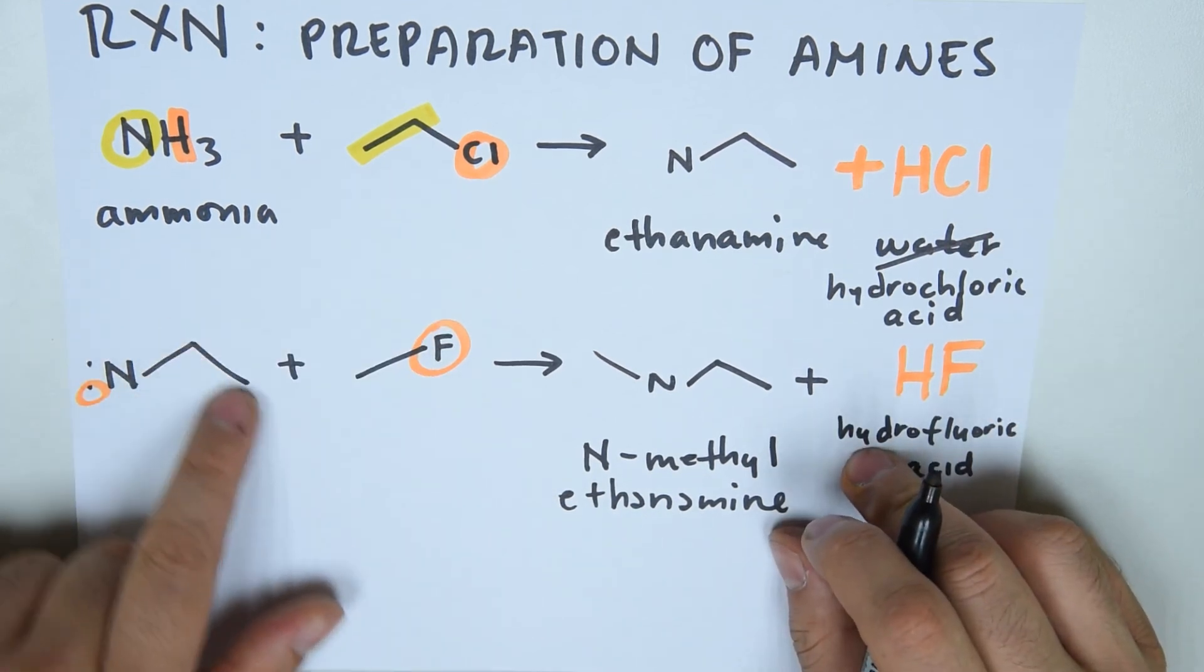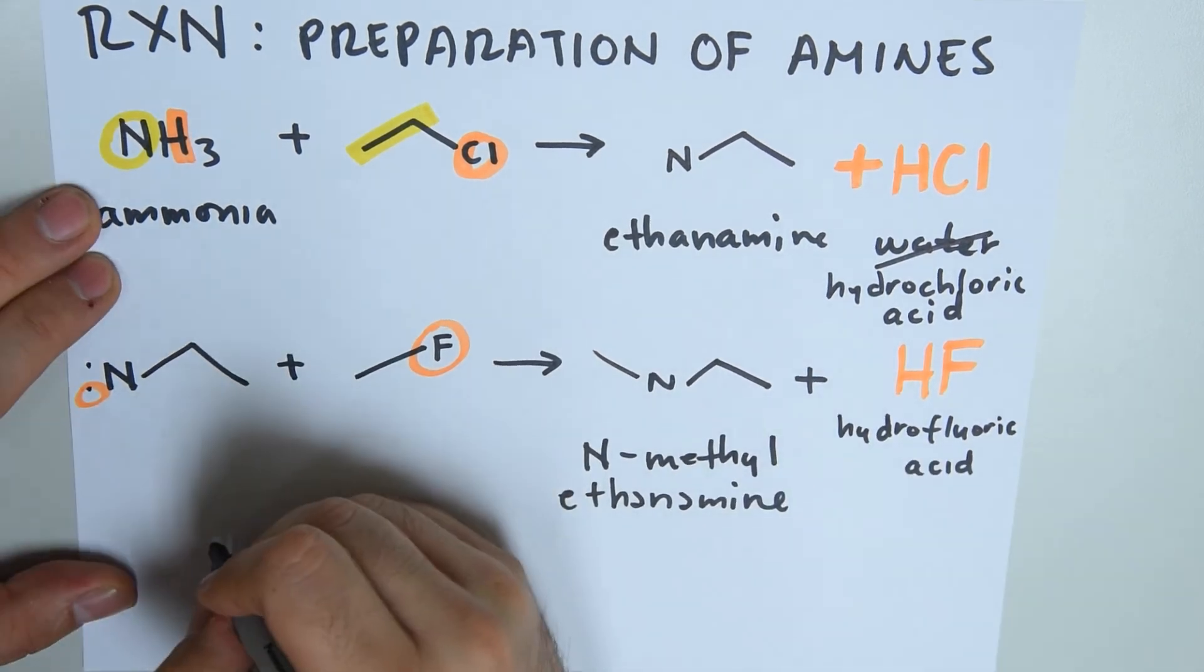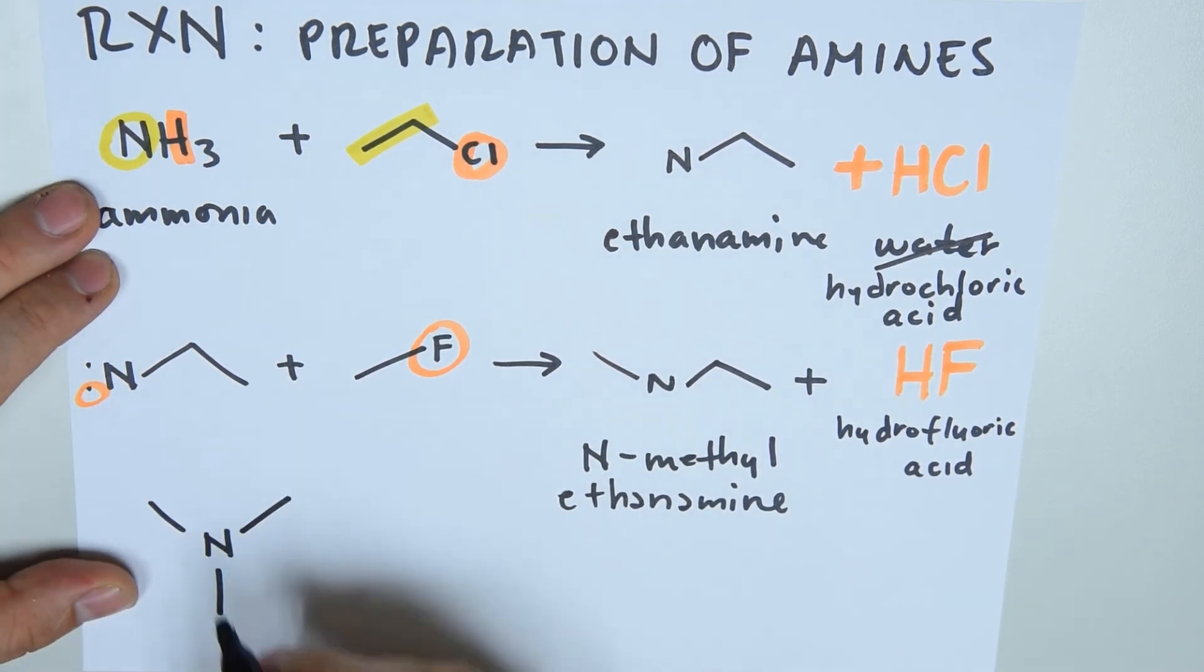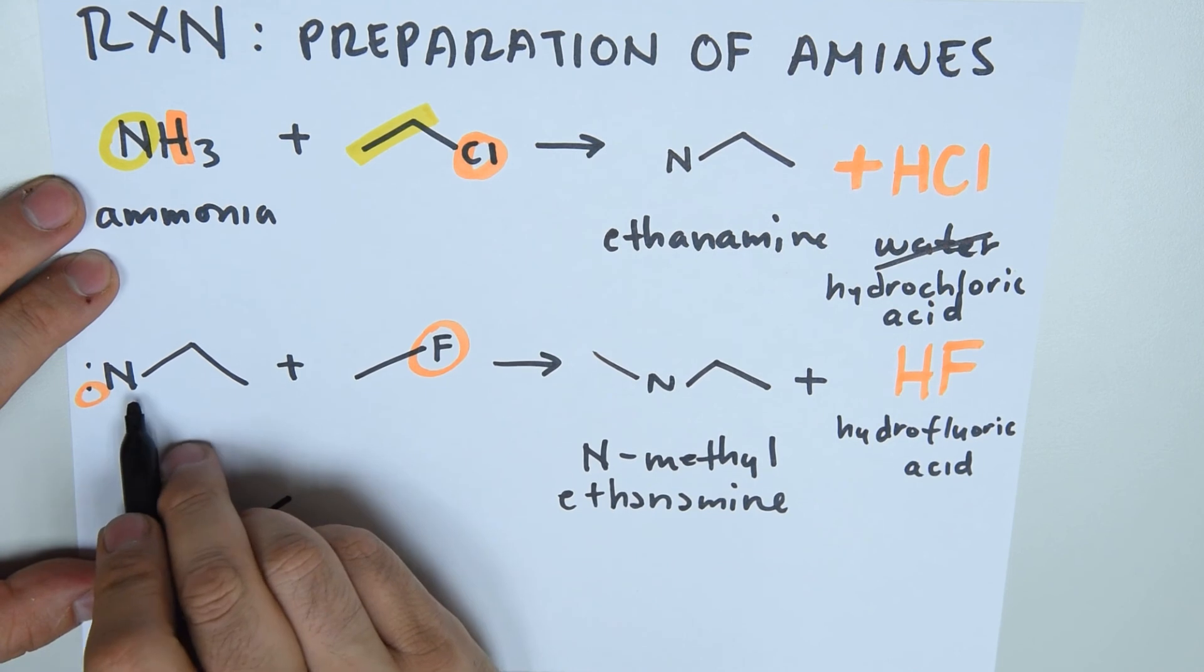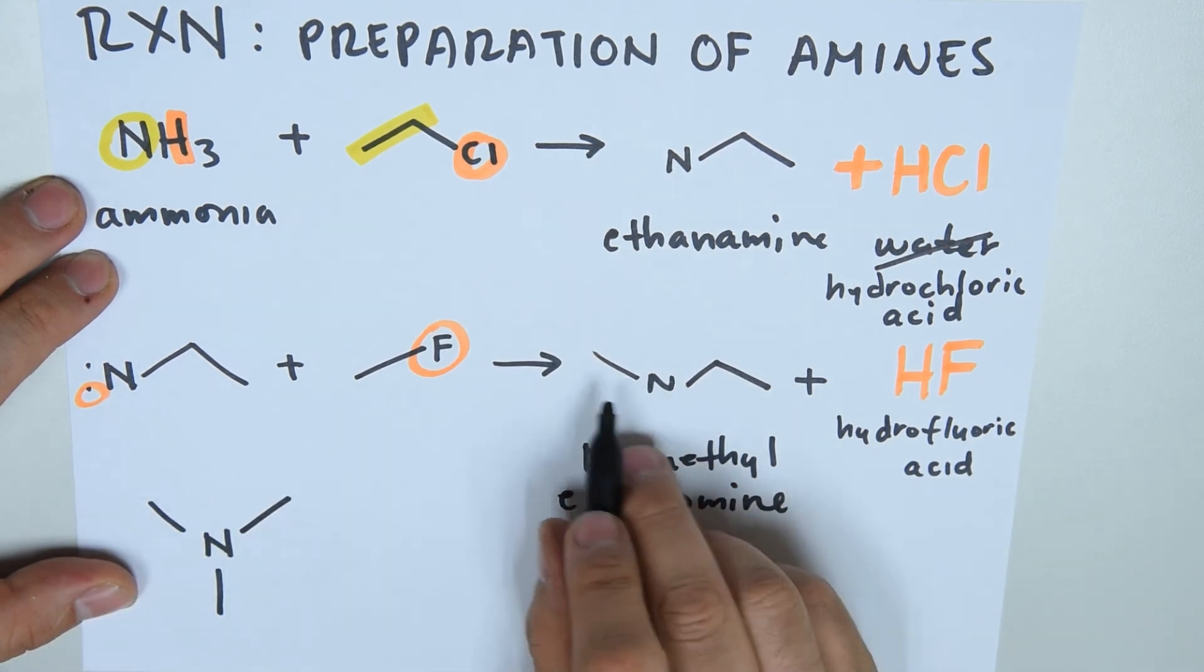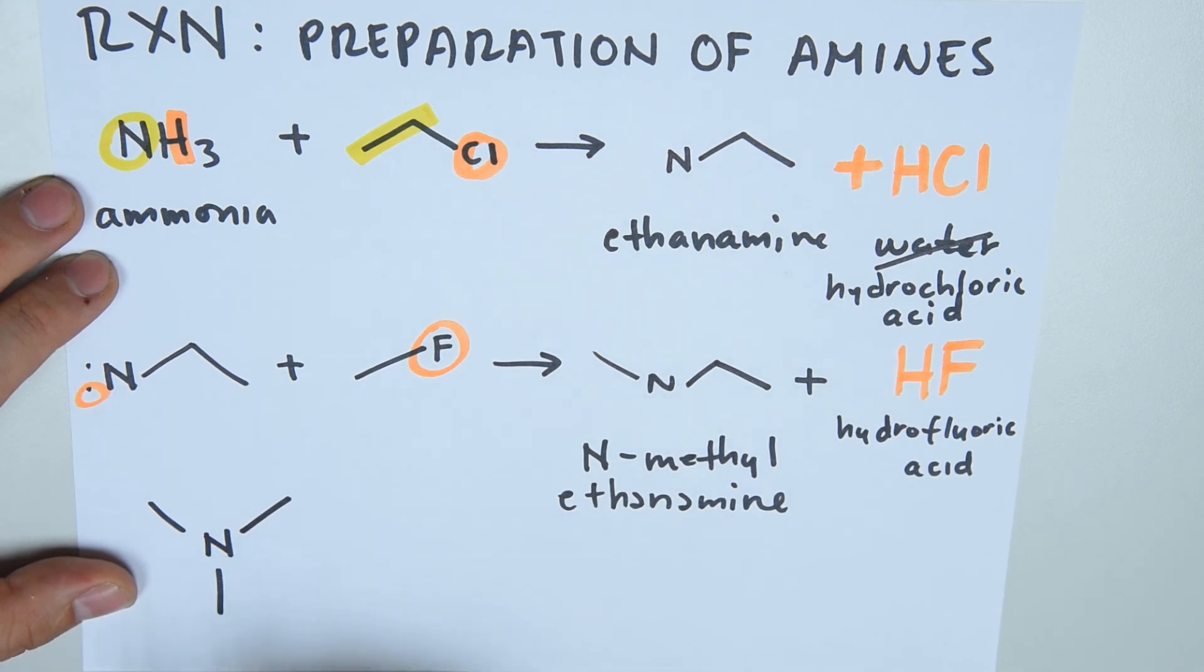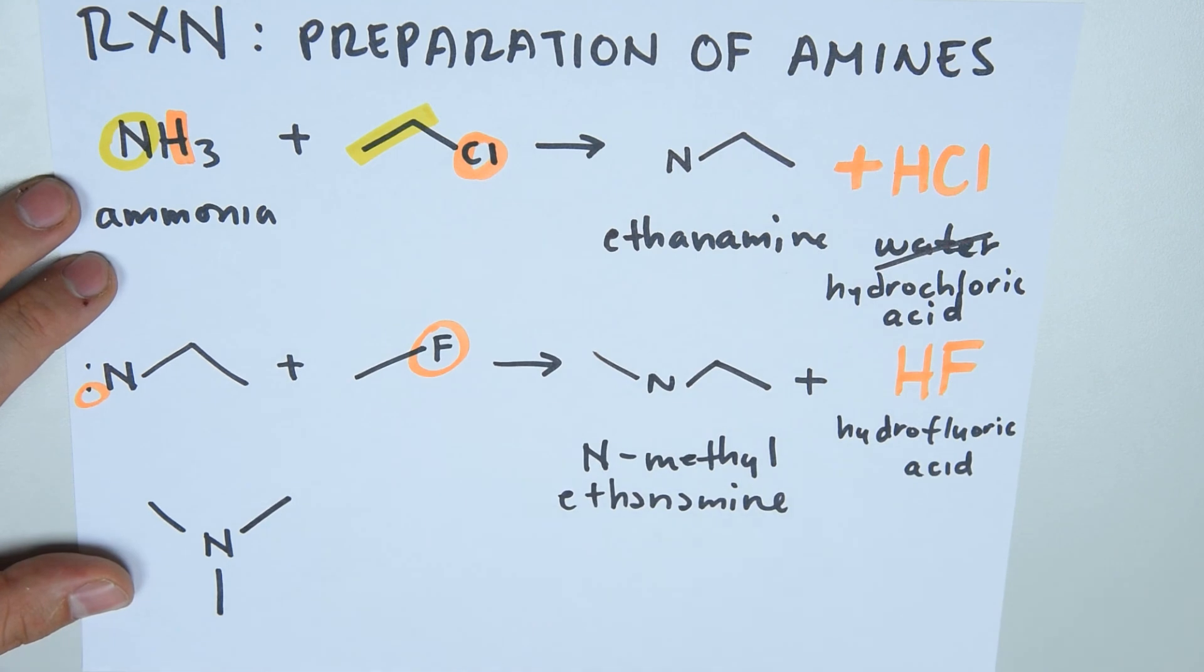And if you already have a chain, remember, nitrogen can accept up to three chains. So this is a primary amine. This is a secondary amine because the nitrogen has two substitutions. And this is a tertiary amine. So you can continue this reaction as many spaces as nitrogen has available.